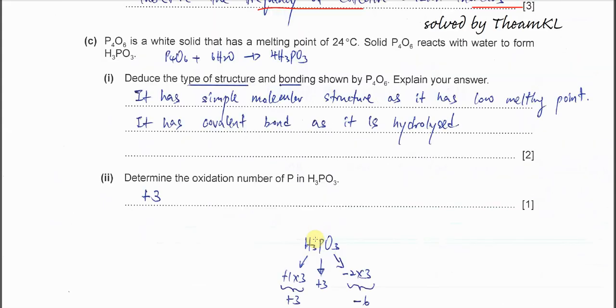Part C: We have this phosphorus oxide with melting point 24 degrees C, quite low. This solid P4O6 reacts with water to form H3PO3. So P4O6 reacts with water to form H3PO3, this is the equation.